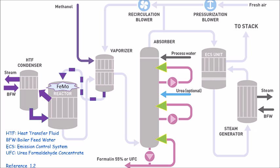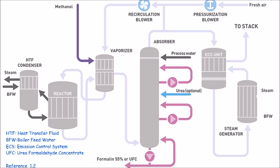The absorber consists of three parts. The formaldehyde from the reactor is fed to the bottom of the absorber and flows into the Emission Control System (ECS) unit, then into the steam generator, where it is used to heat water to boiling point to create steam. The formaldehyde then passes back to the ECS unit.